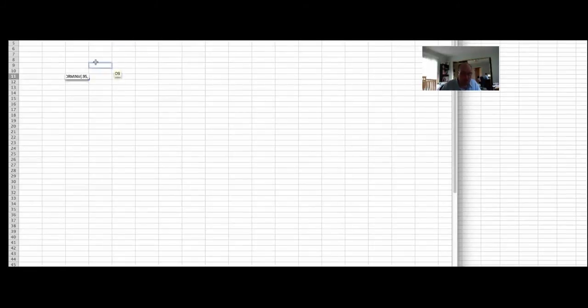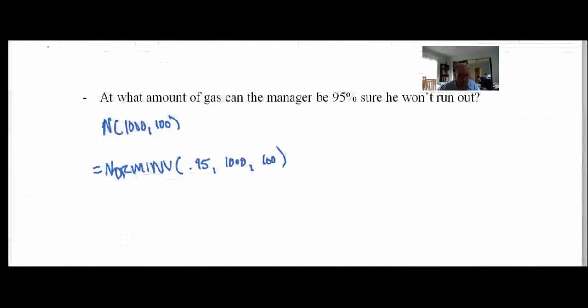Running NORMINV(0.95, 1000, 100) gives us 1,164 gallons. He currently has 1,100, so he's about 64 gallons short of being 95% sure he won't run out. That's roughly only four tanks of gas — so maybe he doesn't feel so bad.